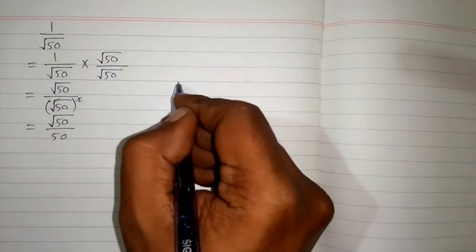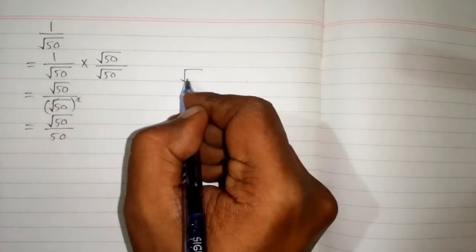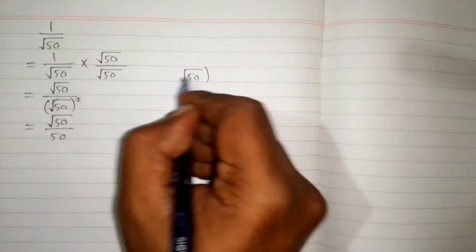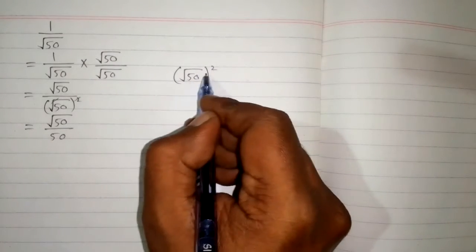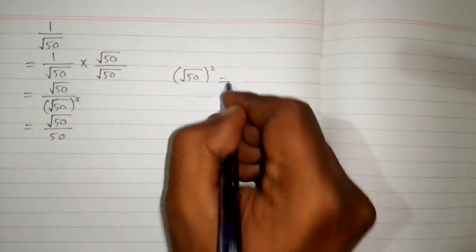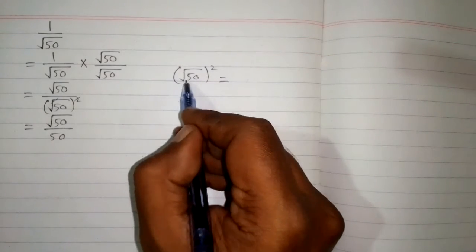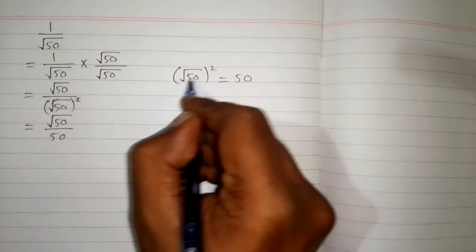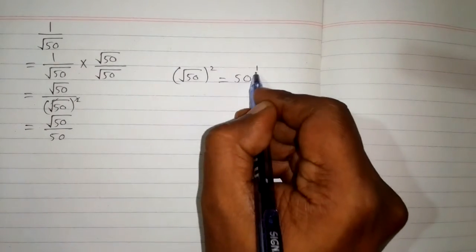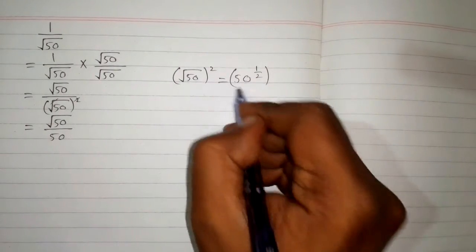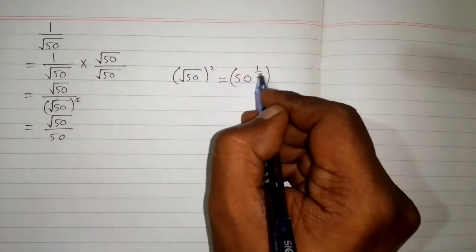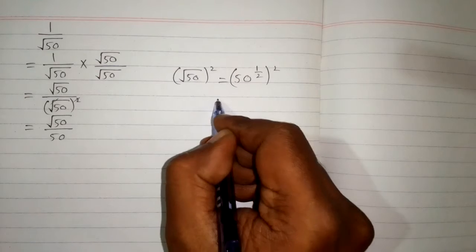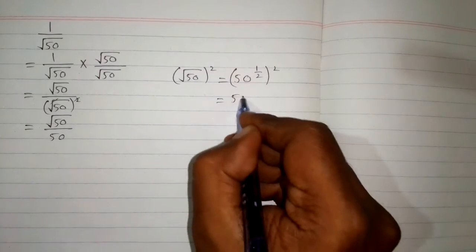Now, why can we cancel the square root and the square? By the definition of square root, we can write the square root of 50 as 50 raised to the power 1 upon 2, because square root means anything raised to the power 1 upon 2. By the rule of indices...